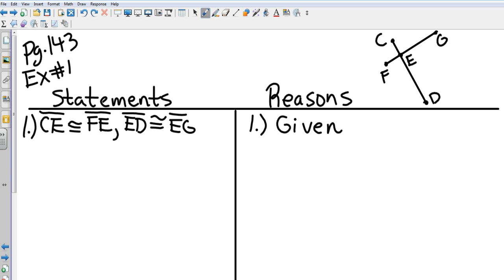The statements are I have been given CE is congruent to FE. So CE, I'm going to go over here and mark it on the line - CE is congruent to FE, and ED is congruent to EG. So those smaller segments are congruent to each other and the larger segments are congruent to each other, and that is the given. What it wants us to prove is that CD is congruent to FG.